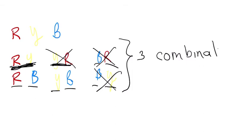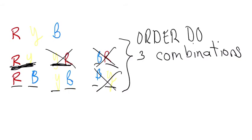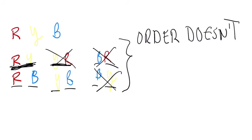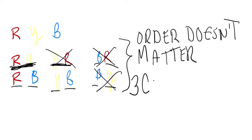That's different from the number of permutations because for combinations, order doesn't matter. Order doesn't matter for combinations, and there are three combinations.